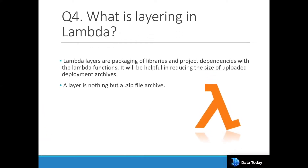The next question is: what is layering in Lambda? A Lambda layer is nothing but packaging of libraries and project dependencies required for the Lambda function. It helps in reducing the size of the uploaded deployment archive. It is an archive file in .zip format in which you add all your packages — for example, a library like Pandas or PyMySQL which may not be natively available on Lambda. You package them and move them to the Lambda layer.